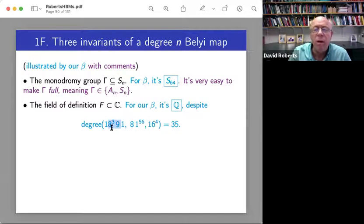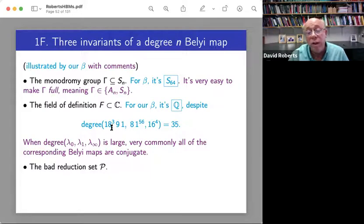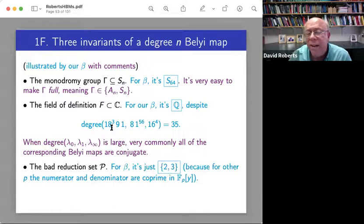Just a random Belyi map would probably have monodromy group all of S64. And I'm going to use the word full to mean as big as possible or almost as big as possible. The second of the big three is the field of definition. So for ours, it's Q.